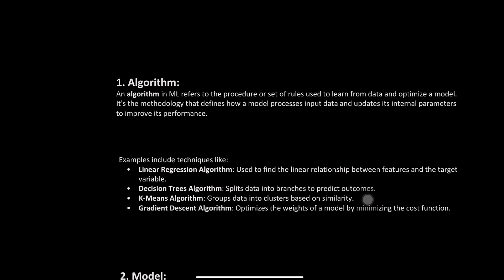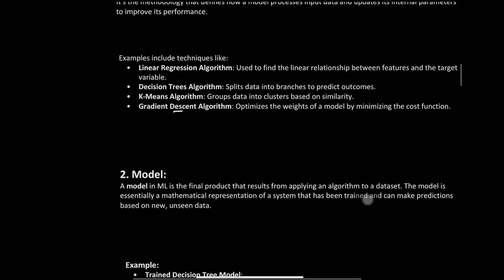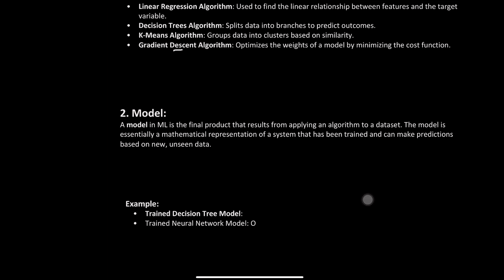First of all we have algorithm and model. An algorithm in machine learning refers to the procedure or set of rules used to learn from data and optimize the model. It is a methodology that defines how to process input data and update internal parameters to improve performance. Examples include linear regression, decision tree, k-means, and gradient descent algorithms.